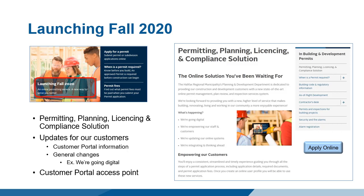Clicking Launching Fall 2020 will open a page dedicated to the changes occurring as a result of the modernization project and the implementation of the customer portal. Some key messages are: we are modernizing to be more accessible and user-friendly; we are empowering our customers by being more transparent about the permitting process and providing easily accessible plain language information on our permitting pages; we are improving accessibility of the web page; and we are going digital, including rolling out an online permitting portal. The external interface of our permitting, planning, licensing, and compliance solution is the Customer Portal.